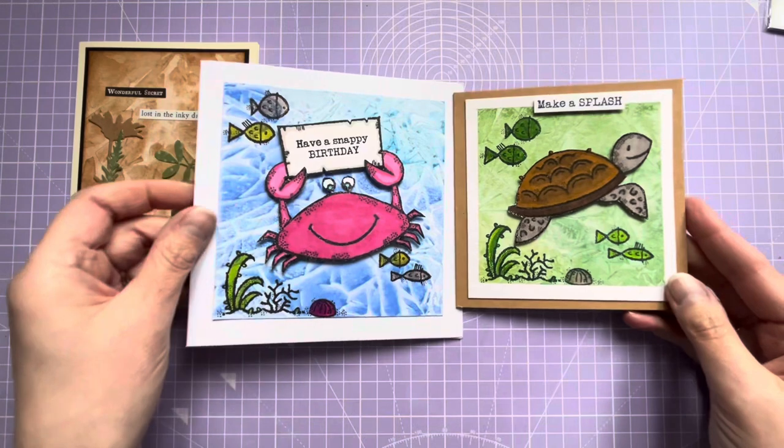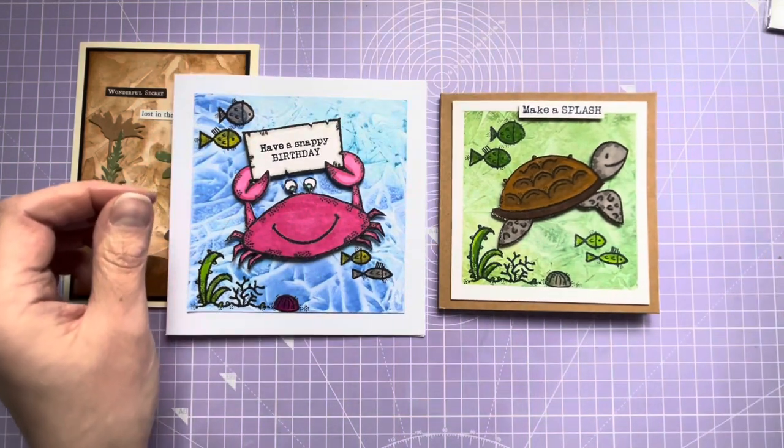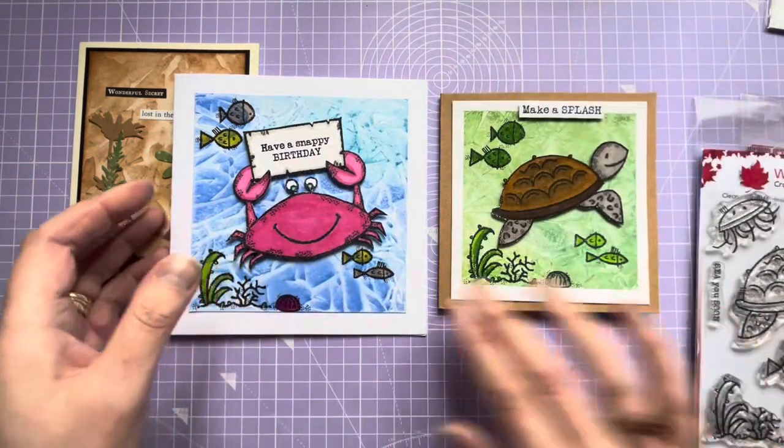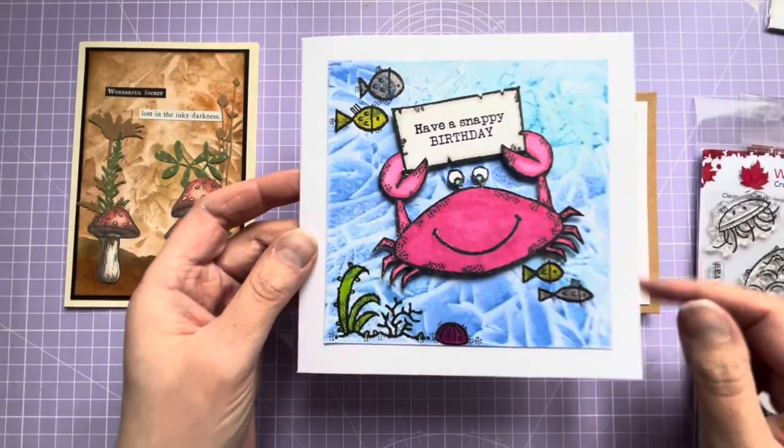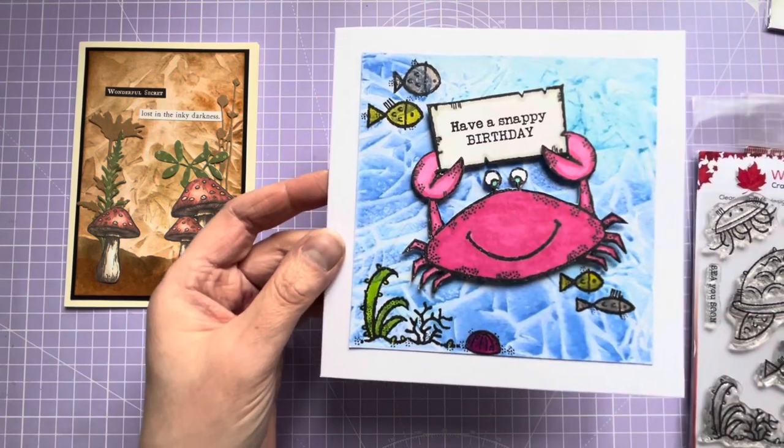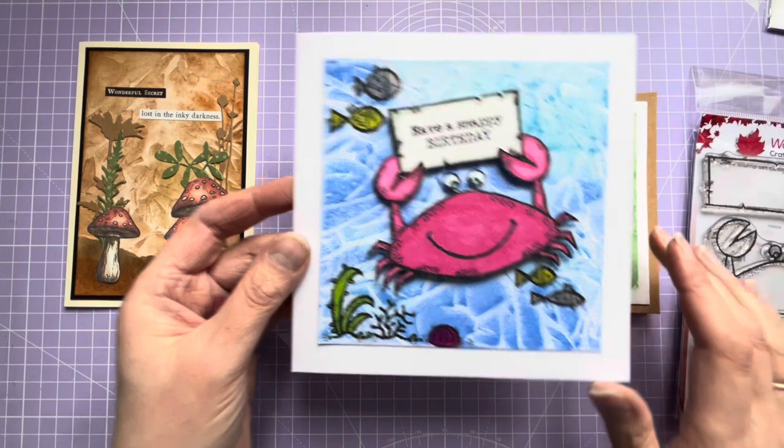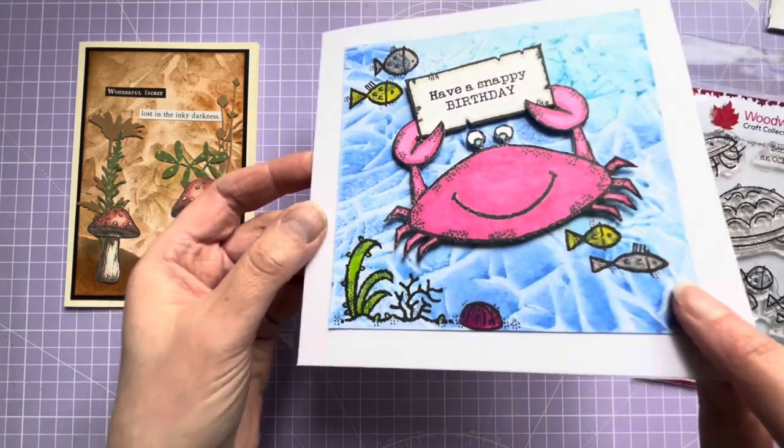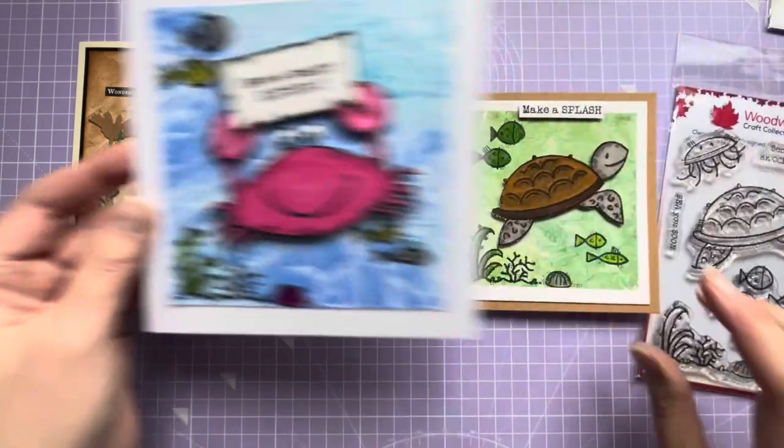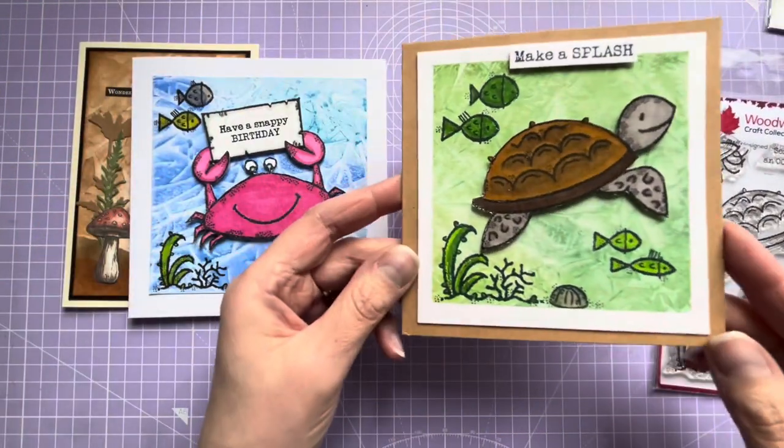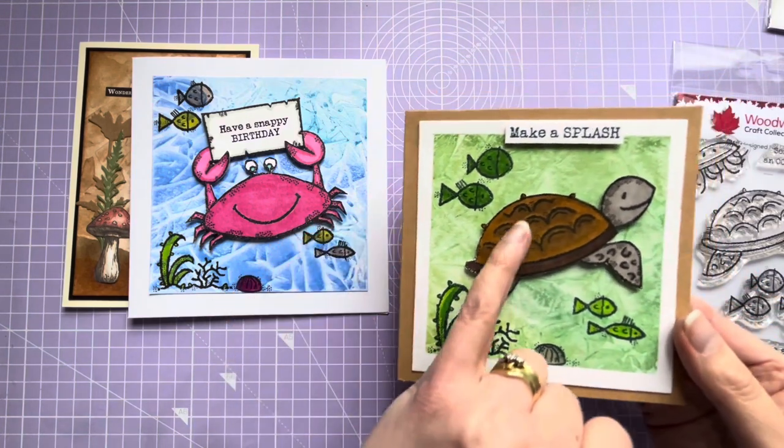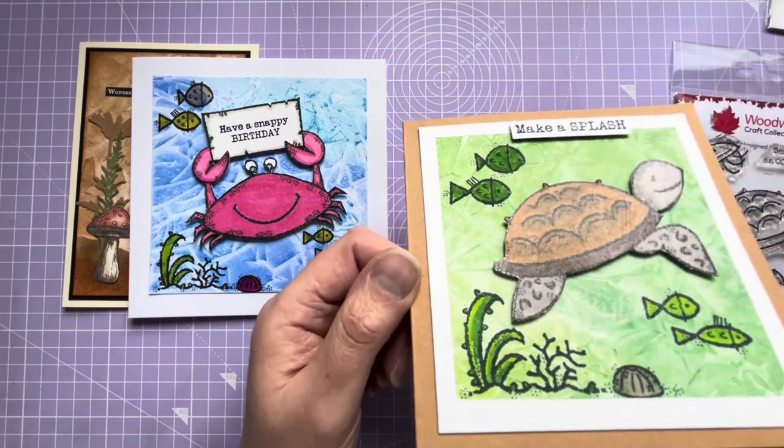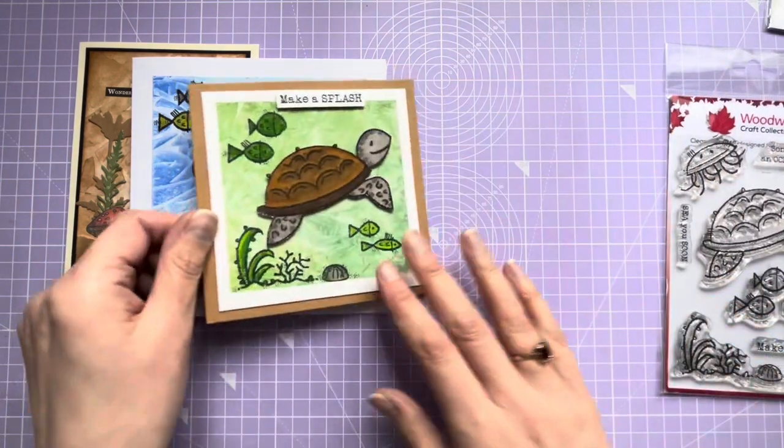These two here, both made using these stamp sets which I've had a little while and not had a chance to play with. So I went with blues, different colored blues for this one to create the water effect. And I've used the crab there and in the background just got these little bits and the fish. And I've colored the fish in with some glittery pens. And then the turtle is on craft card and I've actually painted him with glossy Mod Podge just to make him a bit shiny there. So they were really fun to make.